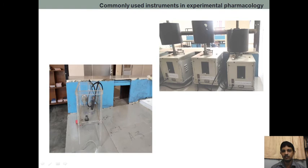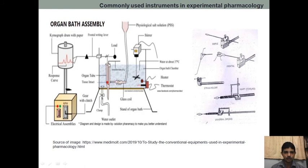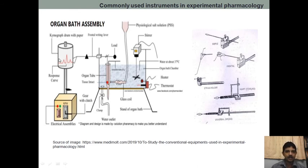This kymograph drum setup is used for bioassay in vitro studies. The kymograph is a rotating recording drum. This is the organ bath with an outer jacket. There is the organ tube, the tissue fixed inside, and the frontal lever arrangement with a load. The fulcrum is there for the lever. The recording drum with paper records the responses. Physiological solution flows through the glass coil, and oxygen is supplied to the muscle through the aerator to keep the tissue in a viable condition. There is also a water outlet.